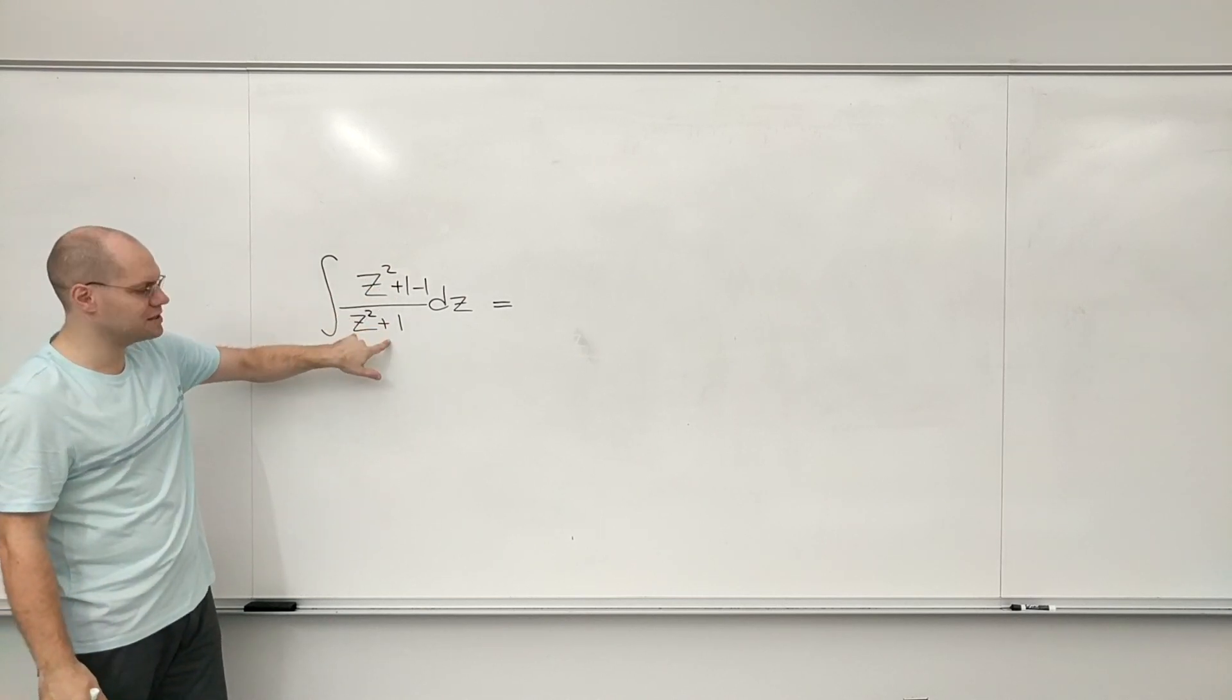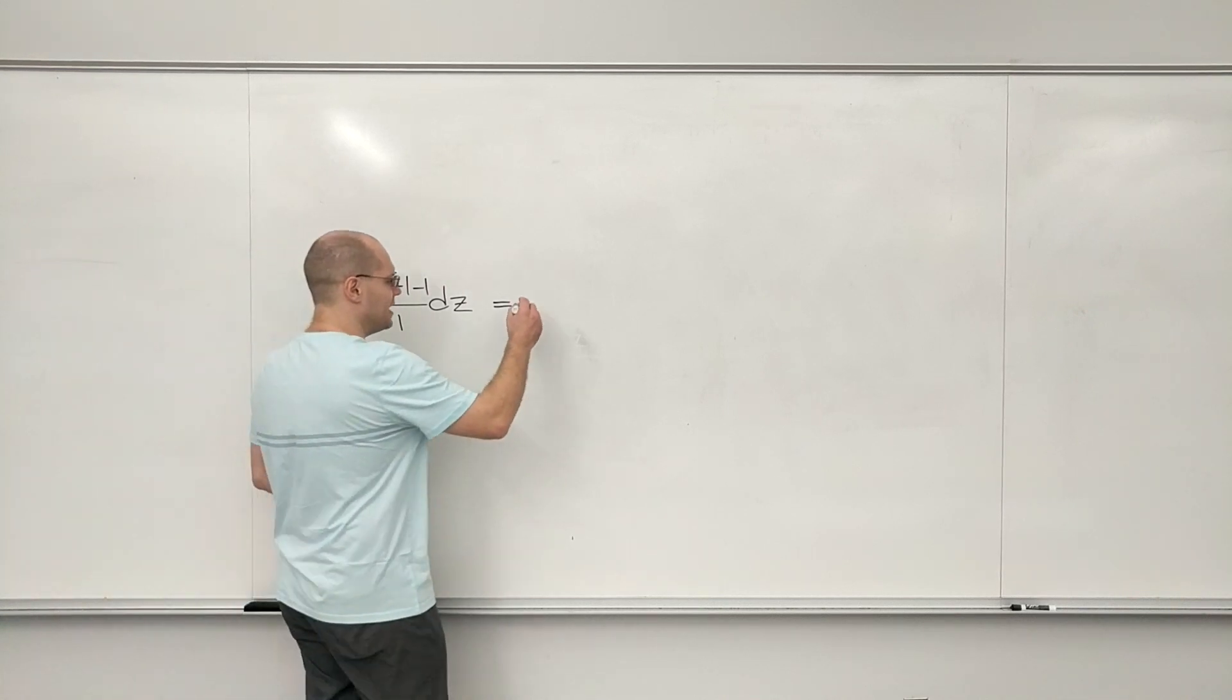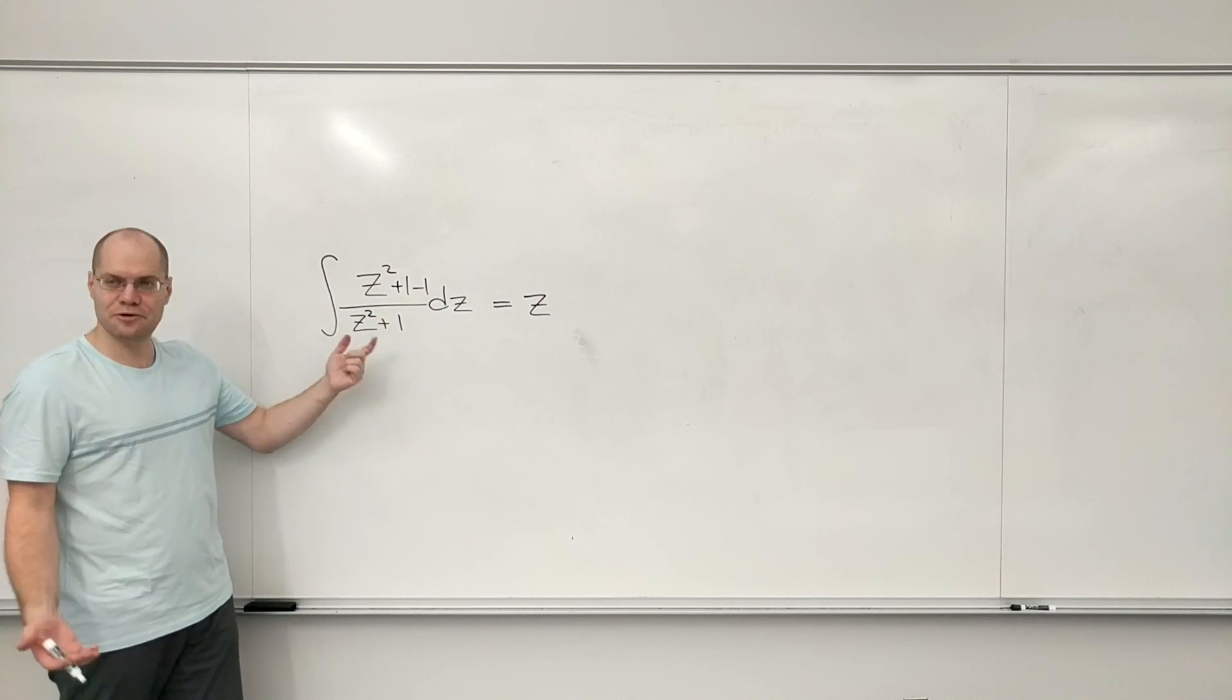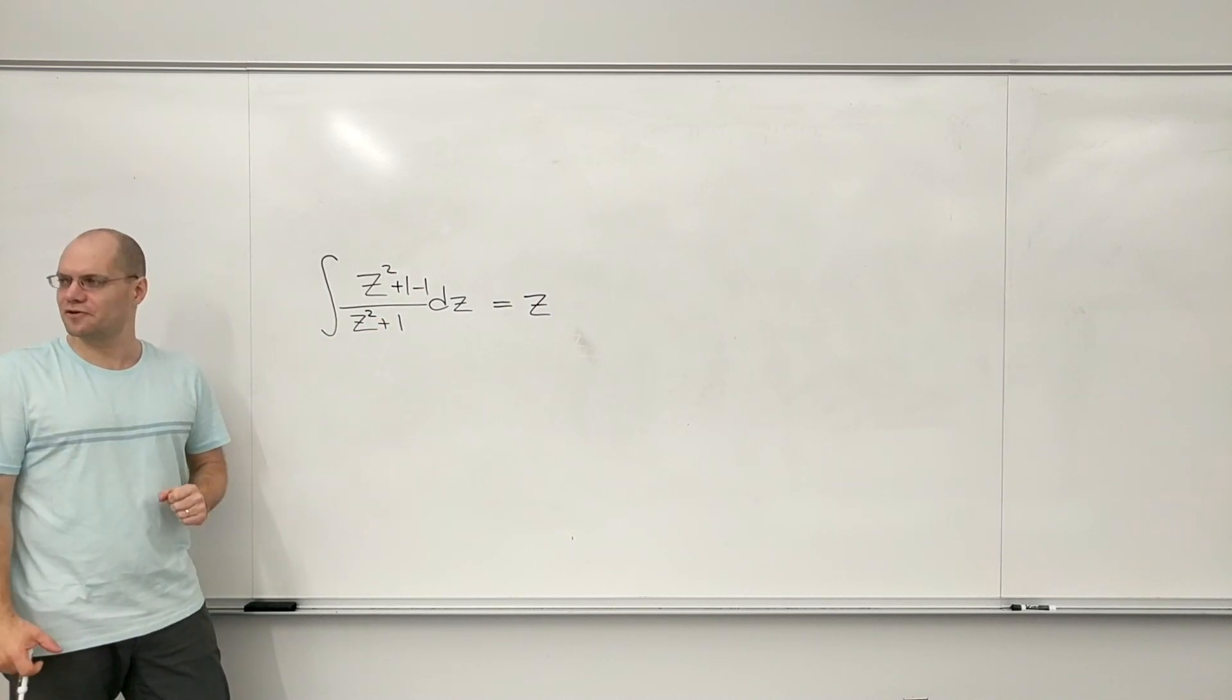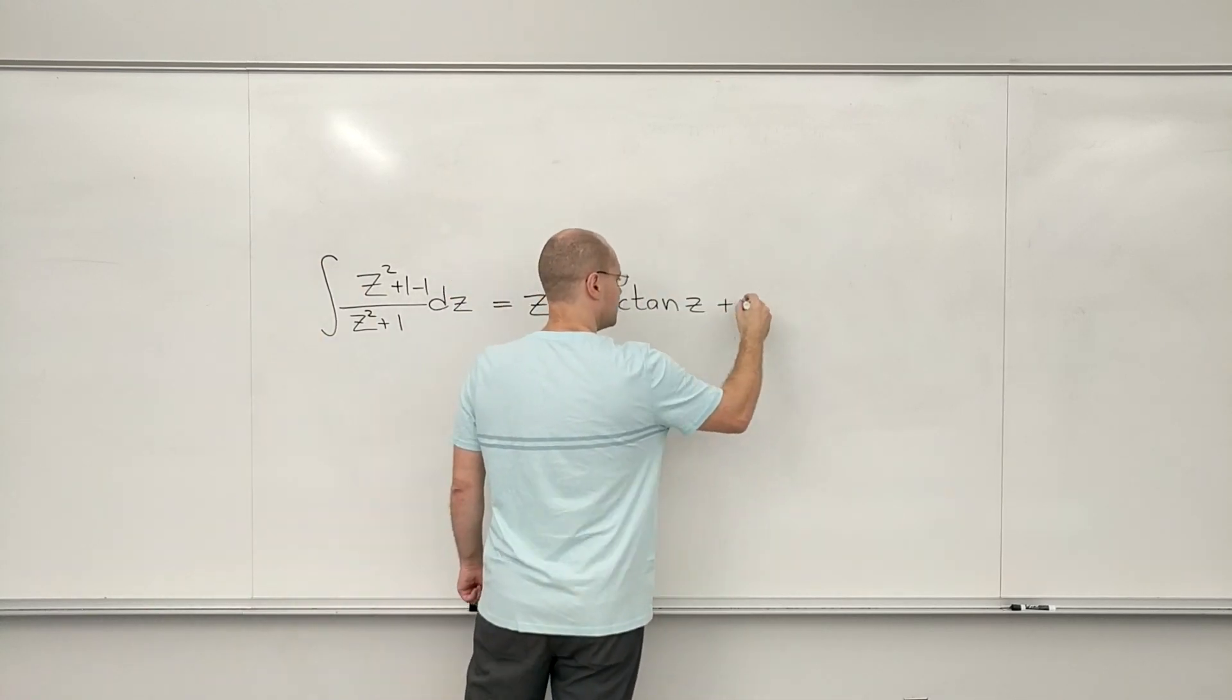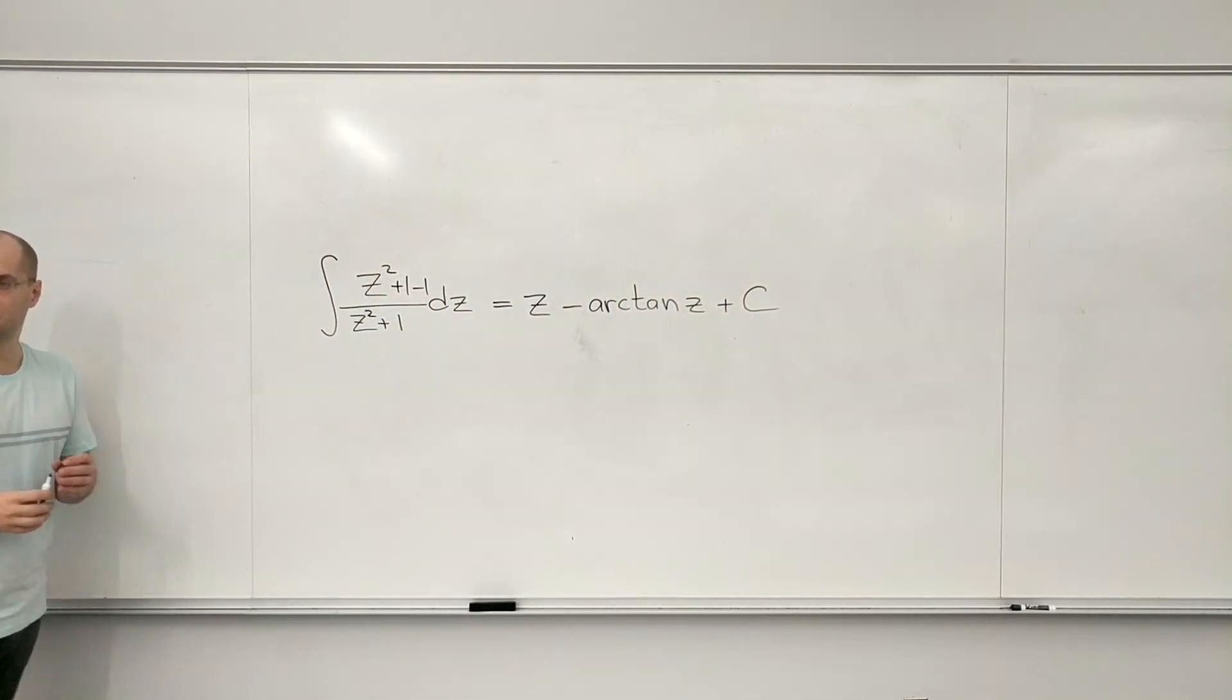So this makes it one, so the derivative of that is z, minus what I recognize instantly to be the derivative of arctangent. That's all there is to it.